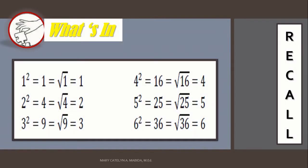Now, what's in? Recall that 1 squared is equal to 1 and the square root of 1 is 1. 2 squared is equal to 4 and the square root of 4 is 2. 3 squared is equal to 9 and the square root of 9 is 3. 4 squared is equal to 16 and the square root of 16 is 4. 5 squared is equal to 25 and the square root of 25 is 5. 6 squared is equal to 36, and the square root of 36 is 6.